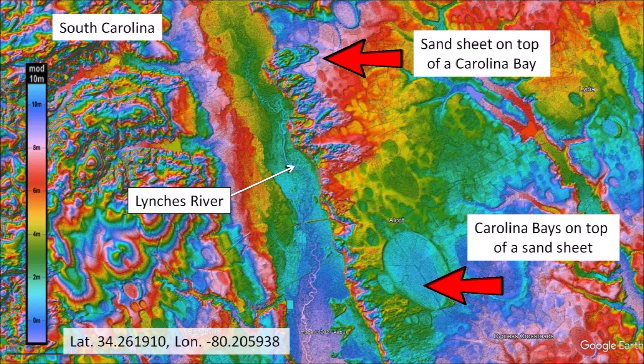On the east side of the Lynch's River, 14 km southwest from Hartsfield, South Carolina, there are several well-defined chevron sand sheets or parabolic dunes, some of which overlay Carolina Bays and some of which are neatly cropped by the bays. This is evidence that the emplacement of the Carolina Bays was contemporaneous with the emplacement of the sand sheets.